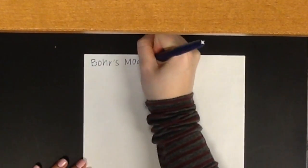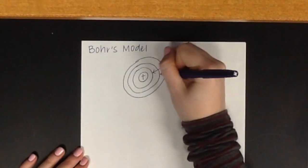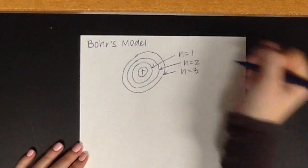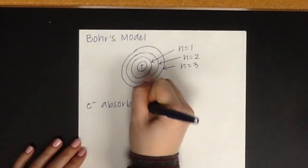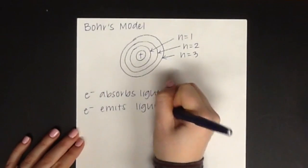As you know in Bohr's model, there are energy levels that are surrounding a positive nucleus. If an electron absorbs light, then the energy level will increase and the atom will get bigger. If an electron emits light, then the energy level will decrease and the atom will get smaller.